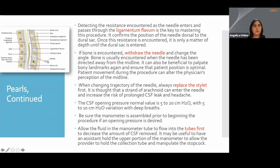When performing your lumbar puncture and inserting your needle, you are going to pass the epidermis, dermis, subcutaneous tissue, the supraspinous ligament, interspinous ligament, and then the ligamentum flavum. When you feel that pop — the sensation of the ligamentum flavum — you are either in your subarachnoid space or very close. Remove your stylet and check for CSF return. If you don't see any, put your stylet back in, advance a couple of millimeters, and then try again.